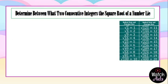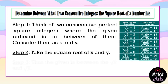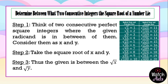As I mentioned in my previous video, it would be better if you can memorize the square roots up to 400, or 20 multiplied by 20. If you have memorized that, congratulations — you did a good job. If not, here we have a quick side note for you to see and realize why it is very important to memorize these. To determine between what two consecutive integers the square root of a number lies: step one, think of two consecutive perfect square integers where the given radicand is in between, and consider them as x and y. Step two, take the square root of x and y. Step three, the given is between the square root of x and the square root of y.